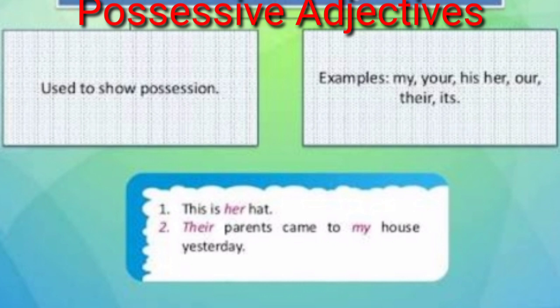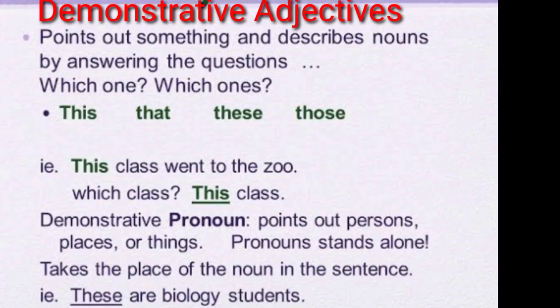Second example: 'Their parents came to my house yesterday.' Whose parents came? — Their. So 'their' is the possessive adjective. We can also ask: whose house did their parents come to? — My. So 'my' is also a possessive adjective here. Now we will see demonstrative adjectives, which point out something and describe nouns by answering 'which one' or 'which ones.'